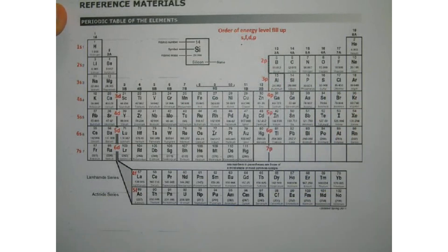The periodic table is ordered by increasing atomic number from left to right and down, because they want you reading it like a book. Now I did some labeling on this periodic table — I labeled the subshells. We have S, F, D, and P all over the place here, and I'm going to show you where everything is.